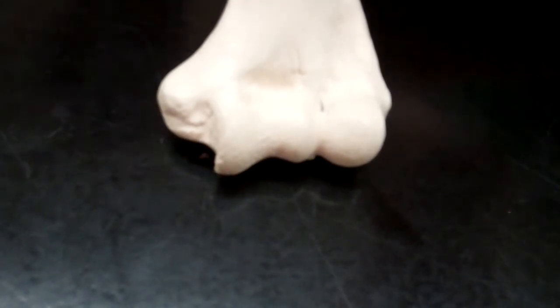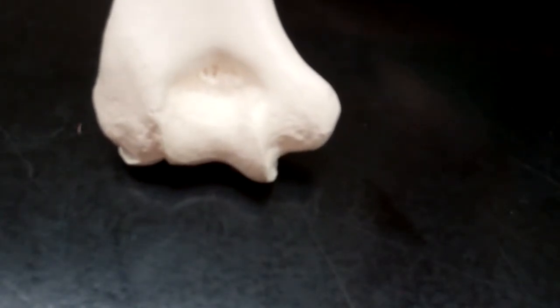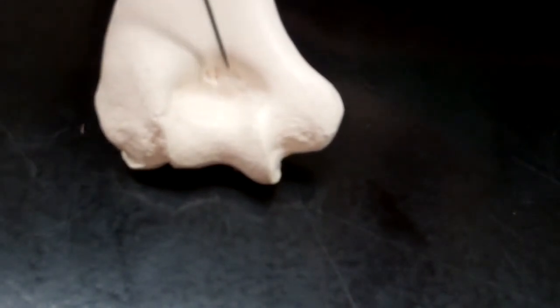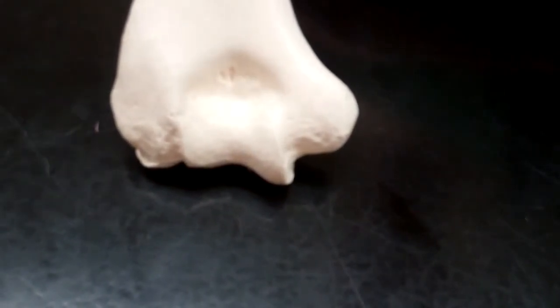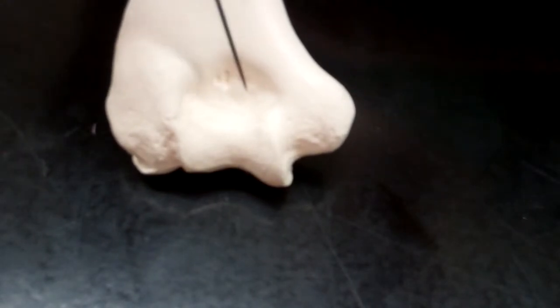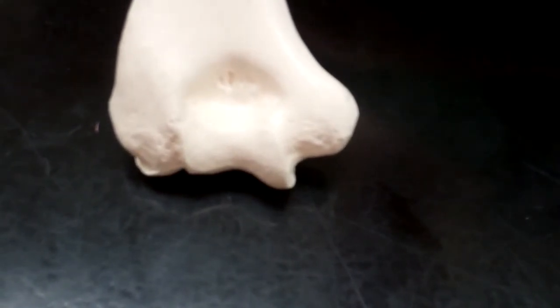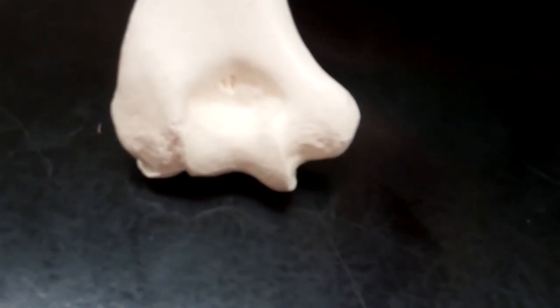Now if we flip the humerus over to the posterior side, there is a much larger indentation. This is also a fossa, and this is the olecranon fossa. This is the olecranon fossa, where part of the ulna is going to articulate with the elbow.